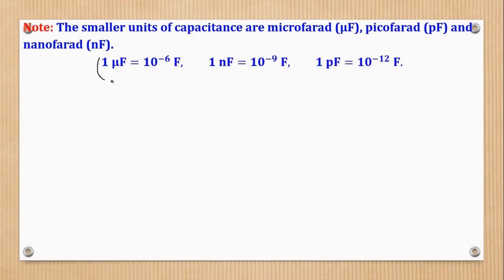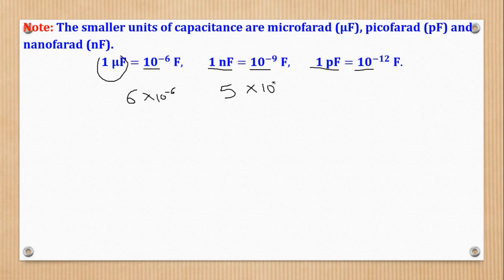So how can you convert if given in that form? You have to remember that 1 microfarad is equal to 10 to power negative 6 farads. And nanofarad means 10 to power negative 9. Picofarad means 10 to power negative 12. So that's how you can convert. So before you substitute in the formula, you have to ensure that the capacitance is in farads.